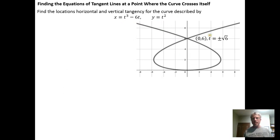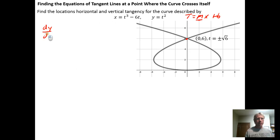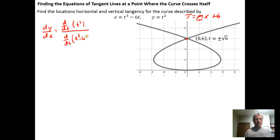Once you know t, it's simply a matter of finding the tangent lines at that point. The tangent lines have the form y equals mx plus b, where m is the slope, and dy/dx gives the slope. So calculate dy/dx, which equals d/dt of t squared in the numerator over d/dt of (t cubed minus 6t) in the denominator, giving 2t over (3t squared minus 6).